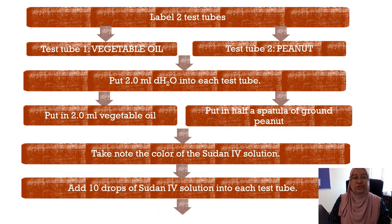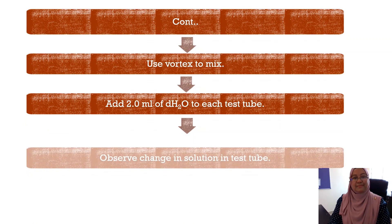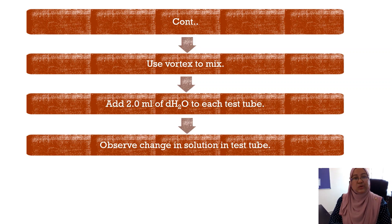This is the final procedure to determine the presence of lipid. Label two test tubes: test tube one for vegetable oil, test tube two for peanut. Place 2 ml of water into both test tubes. In test tube one, put in 2 ml of vegetable oil; in test tube two, put in half a spatula of ground peanut. Take note of the color of the Sudan IV solution, then add 10 drops of Sudan IV solution into each test tube. Mix both test tubes using a vortex mixer, then add 2 ml of water to each test tube and observe any changes that occur.